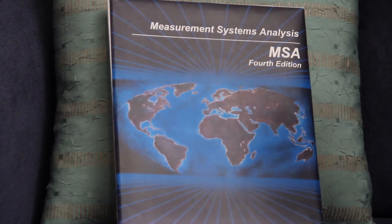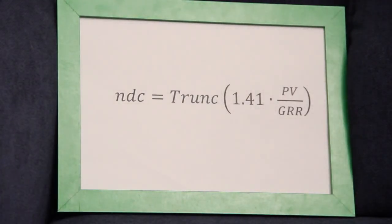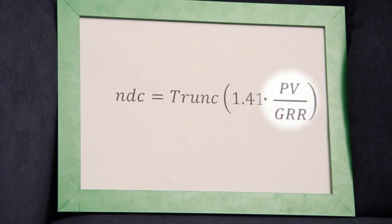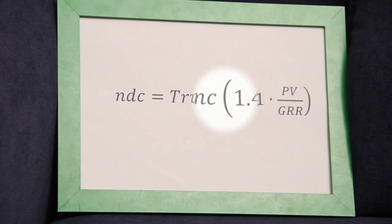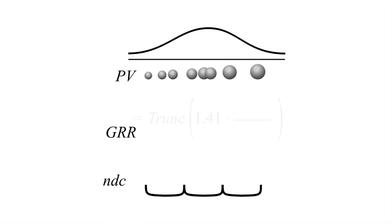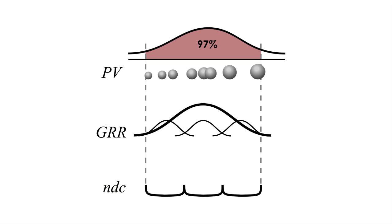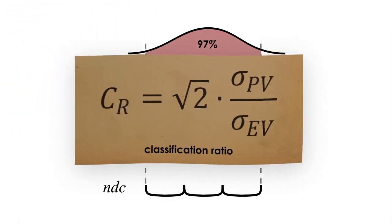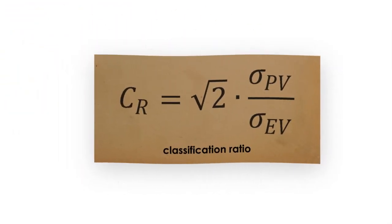In the MSA, the NDC is calculated as a ratio of the part variation to the gauge R&R times the square root of 2 rounded to two decimal places and then truncated to a whole number, and the MSA claims that the number of categories covers the part variation span with 97% probability, based on the estimated gauge R&R. The idea is quite sound, and it in fact corresponds to the classification ratio, a parameter that is nowadays almost forgotten.